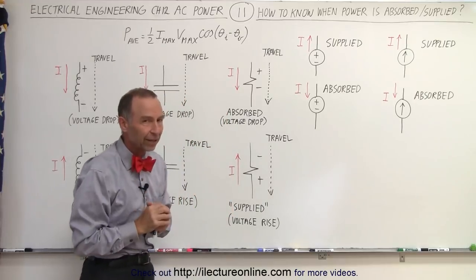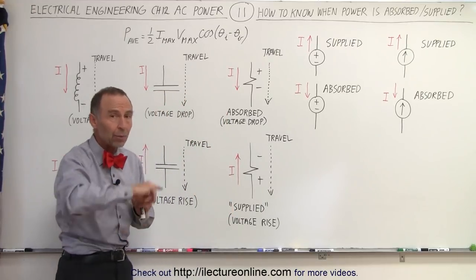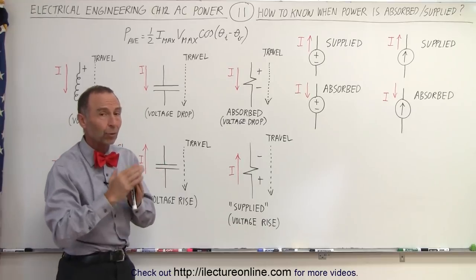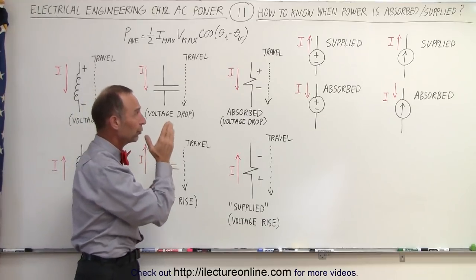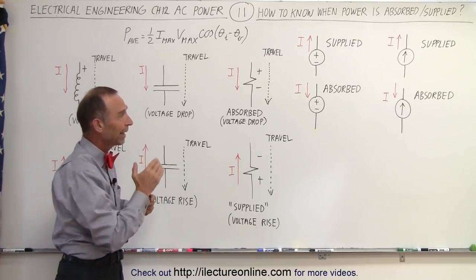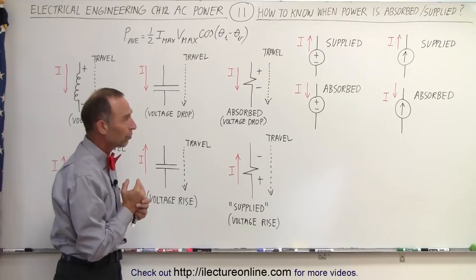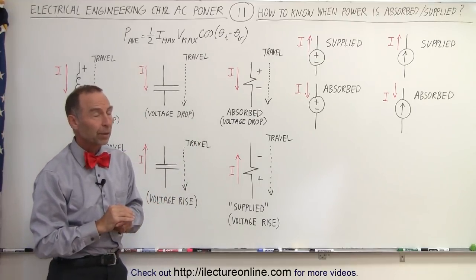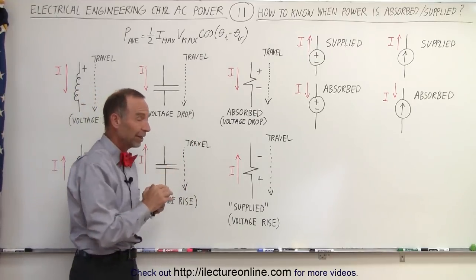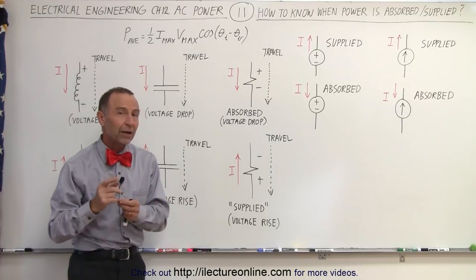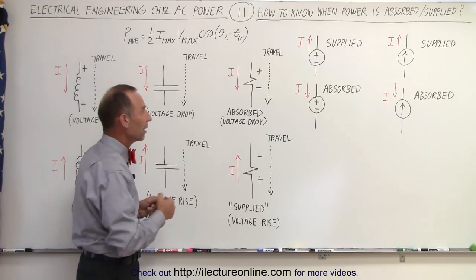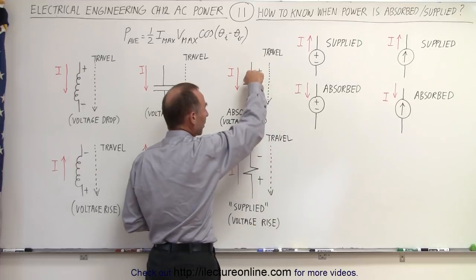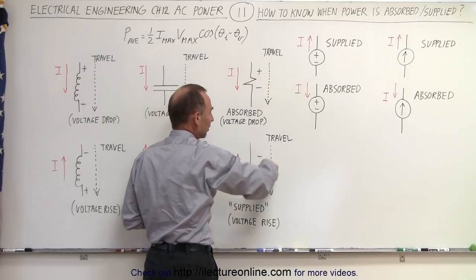And that's how we can tell the difference. It doesn't matter how we travel around the mesh — it simply only depends upon the relative direction of the current in the mesh and the current in the current supply, and the polarity of the voltage supply. But when we come to resistors, it doesn't matter which direction we travel around the mesh. Here we have indicated that we're going to travel across the resistor in this direction.